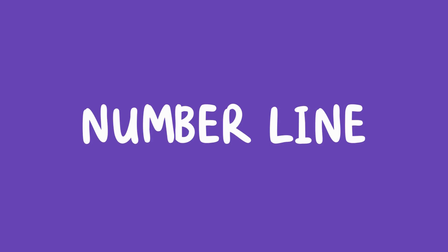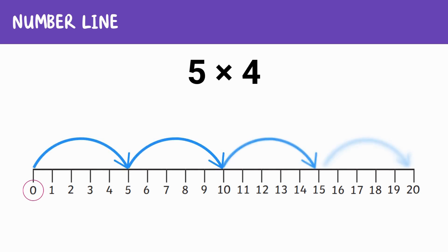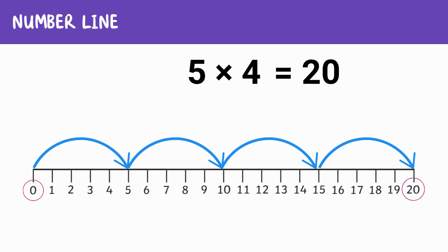Last but not least, we have the number line. This strategy helps you multiply by hopping along the number line. Let's say we want to multiply five times four. Once we have a number line, we start at zero, then hop by five four times: one, two, three, four. Where do we land? On 20. So five times four equals 20.